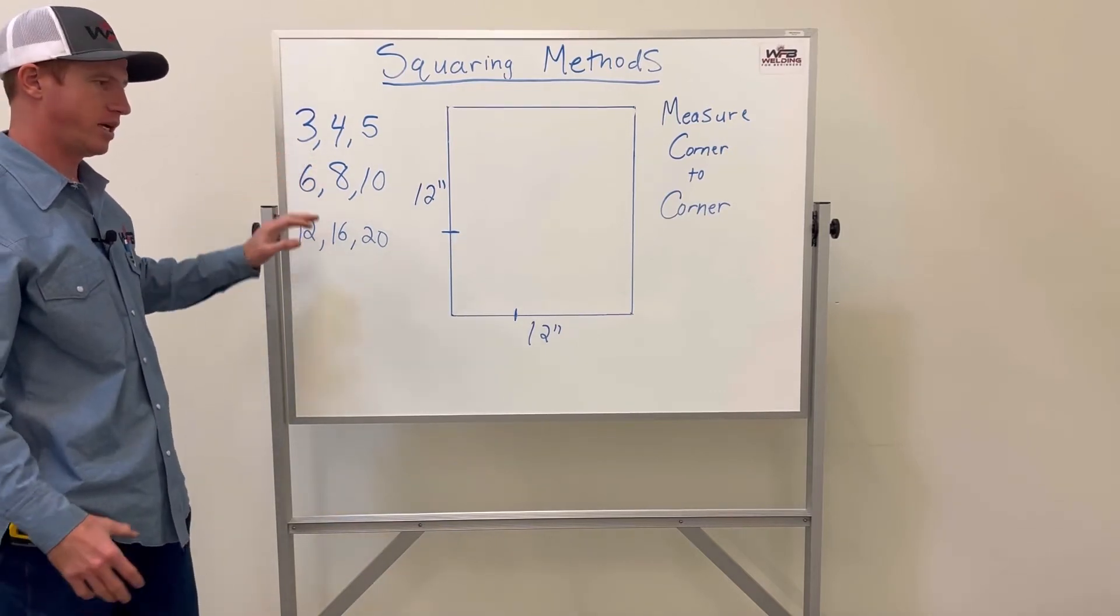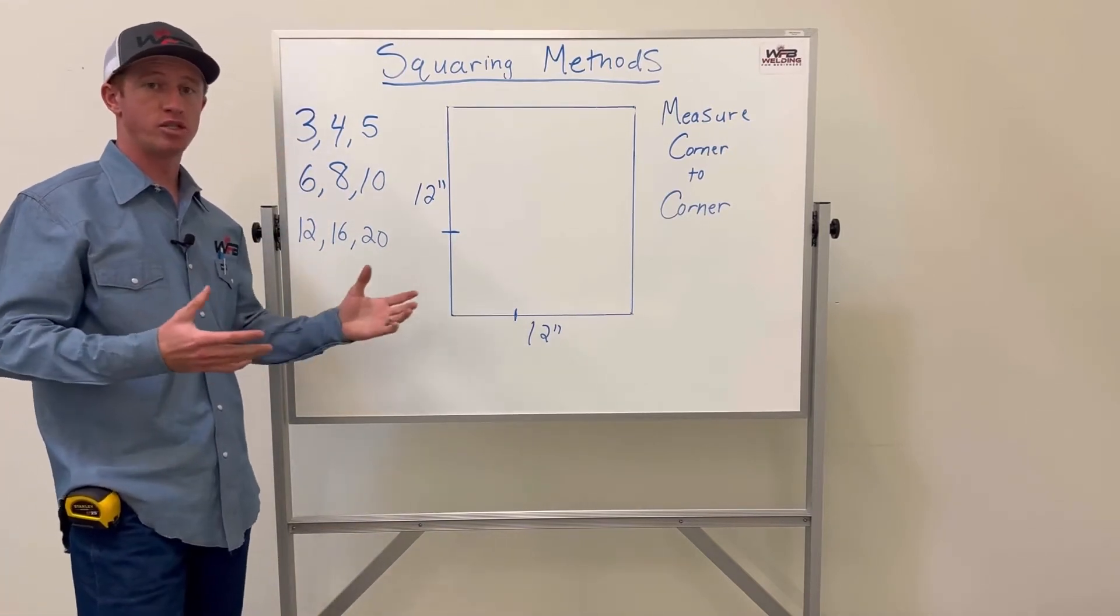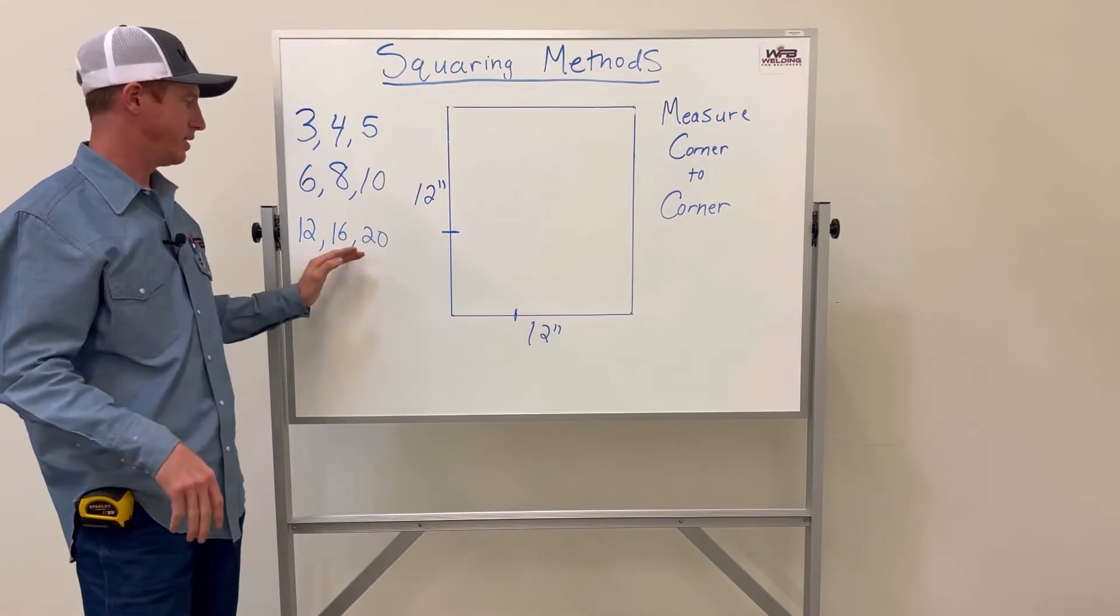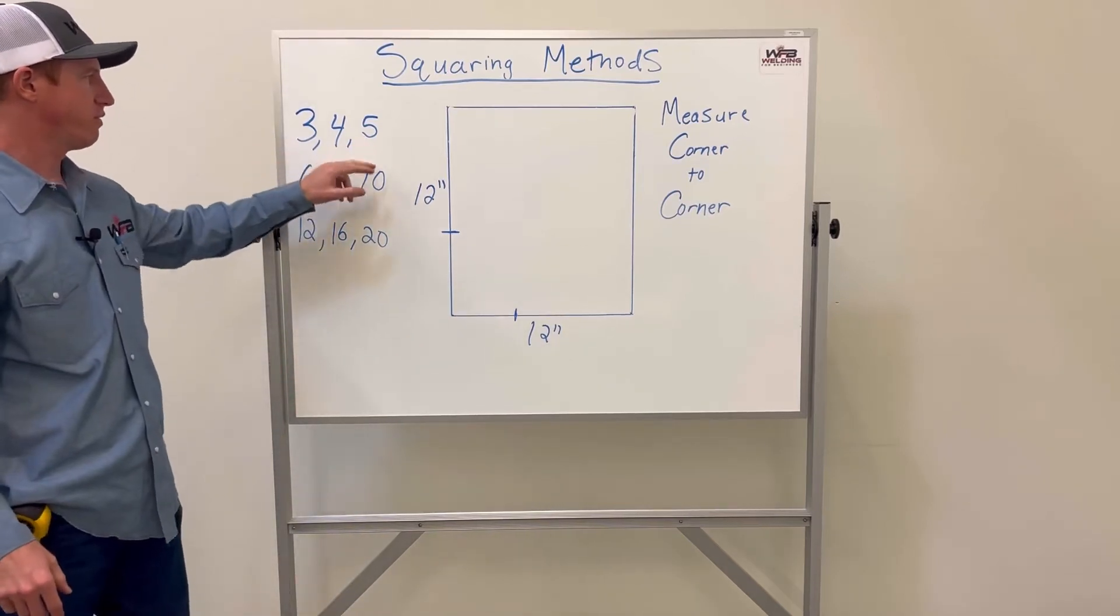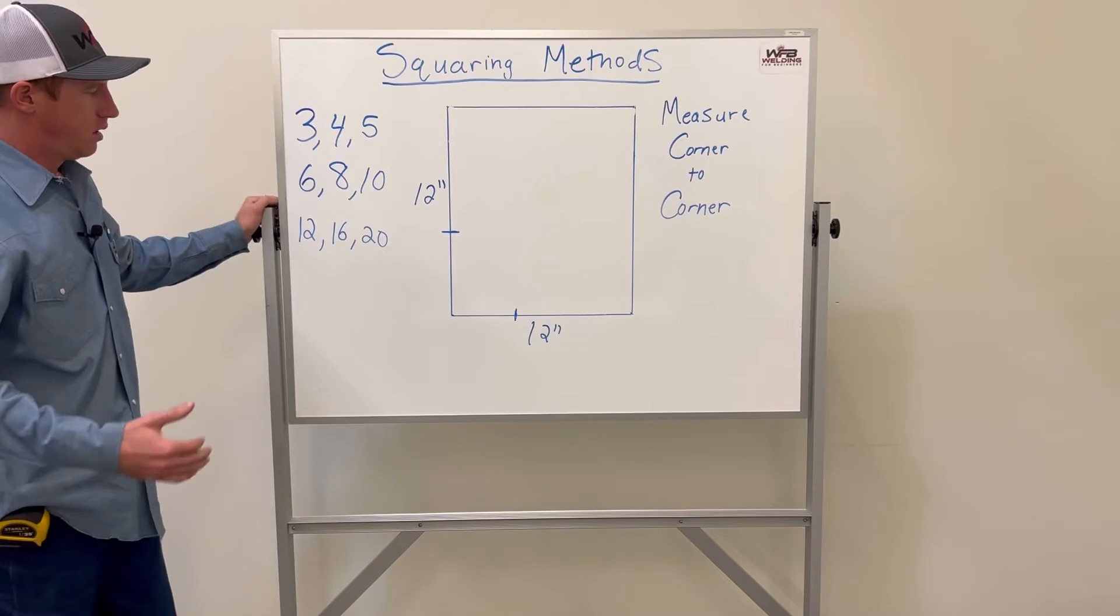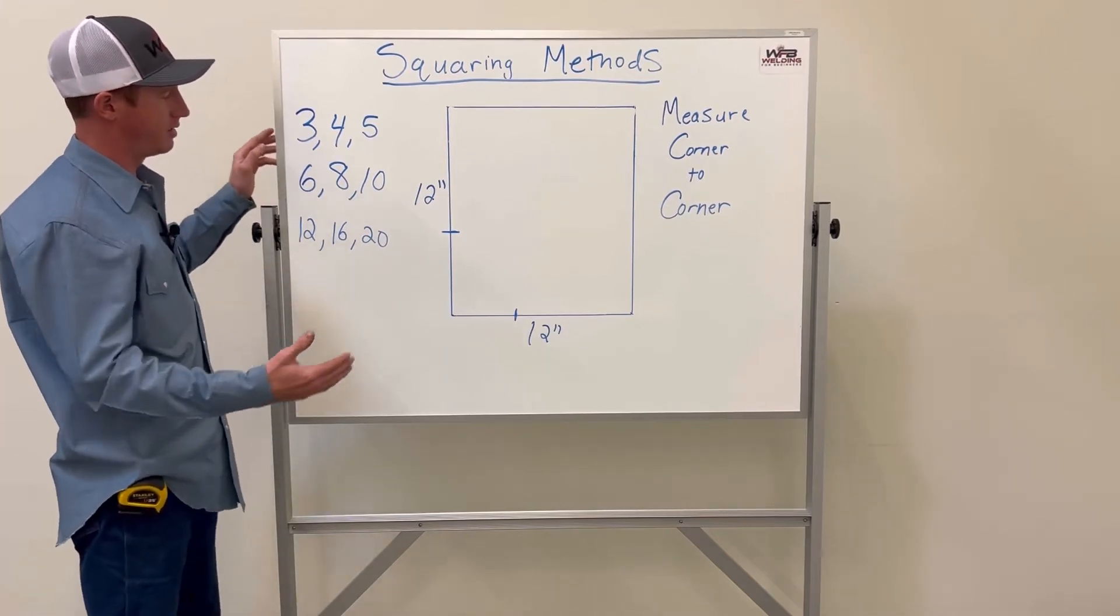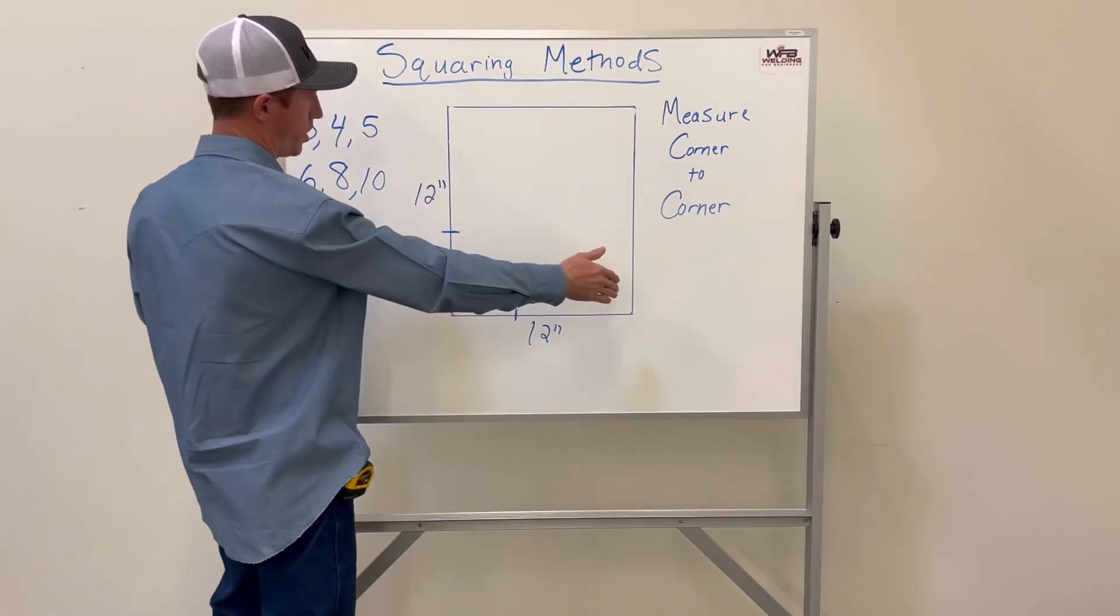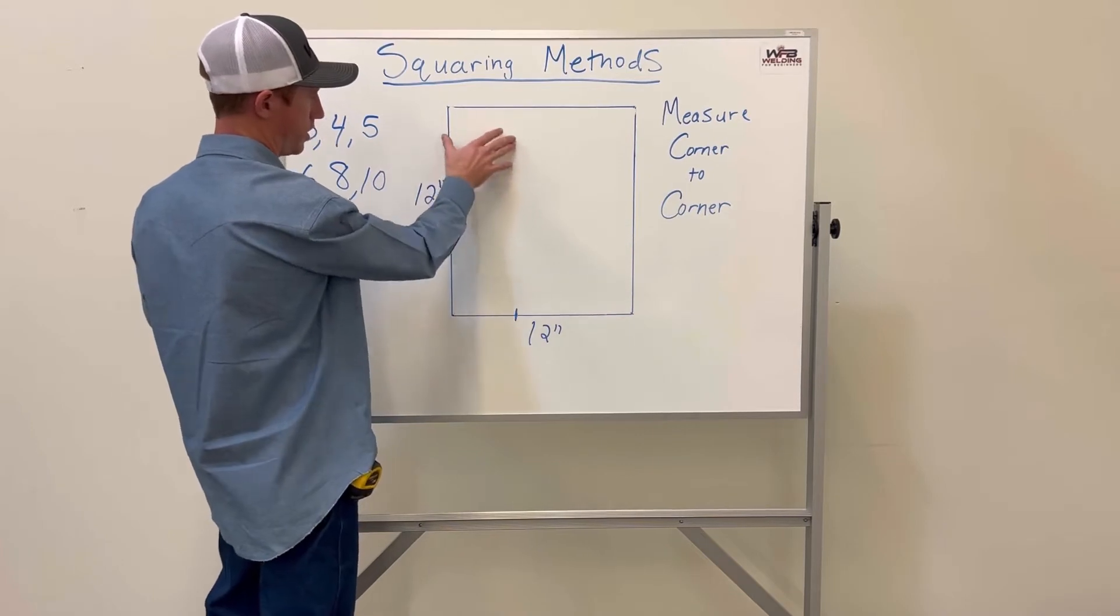Another great method I use is when building shade structures—I do this method a lot. It's the 3-4-5 method. Say you're building a big structure, say this was a 120 by 120 square structure.